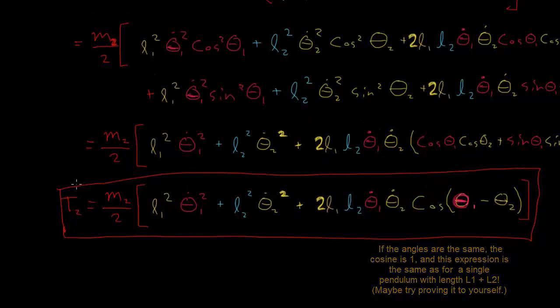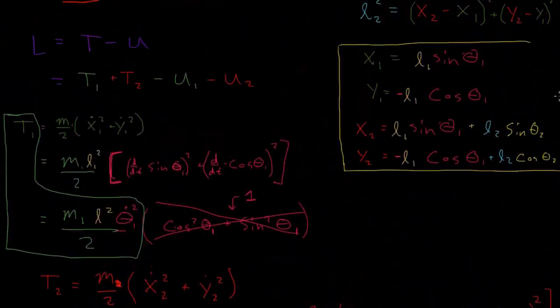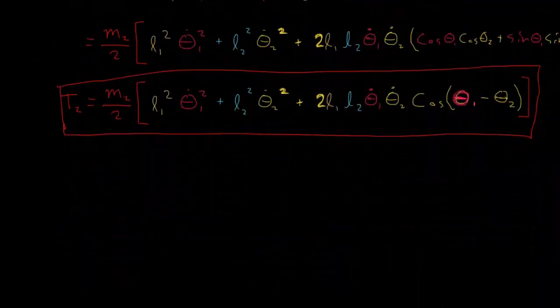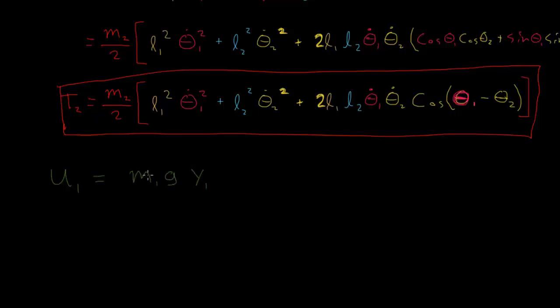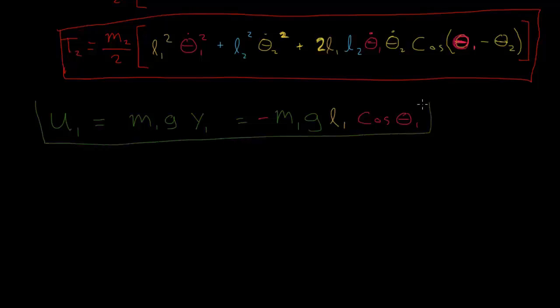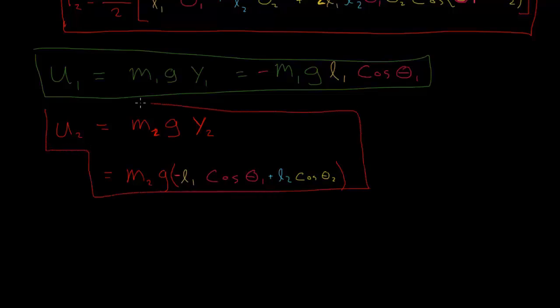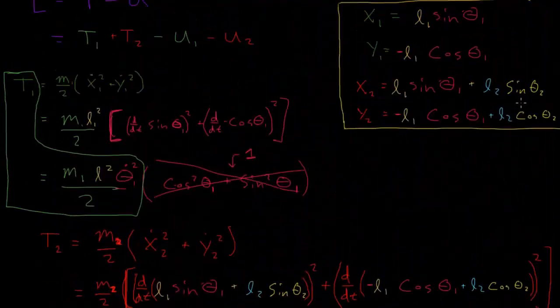And now we will find u1 and u2. So now let's look at u1. So here's our u1, and now let's do u2. Now with that we have our entire Lagrangian all in terms of these angles.